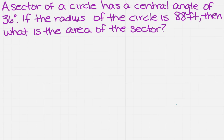We know that a sector of a circle has a central angle of 36 degrees. If the radius of that circle is 88 feet, then what is the area of the sector?